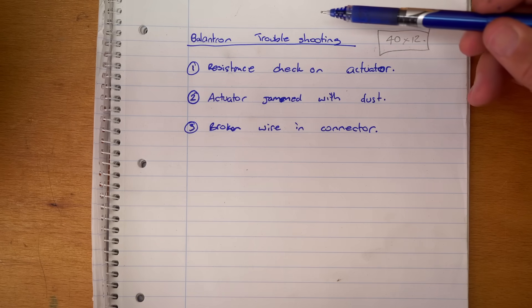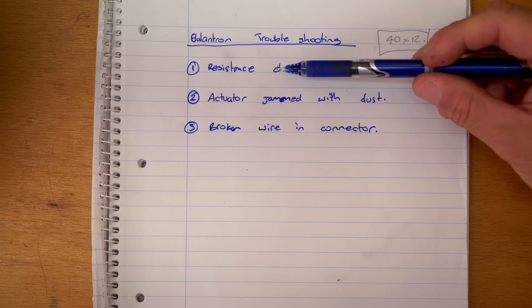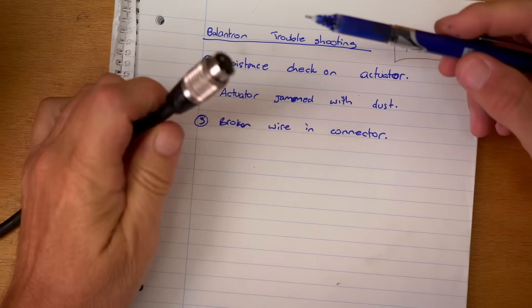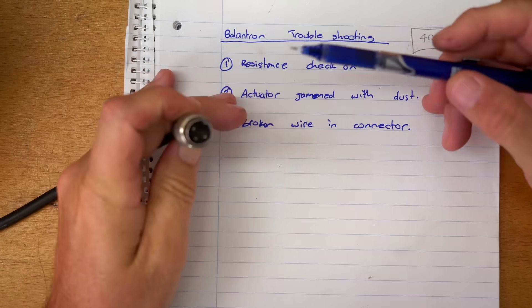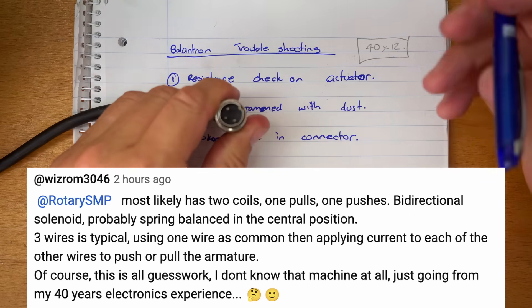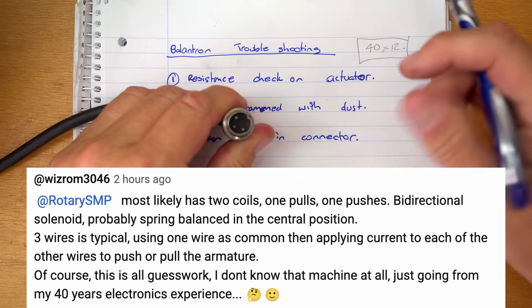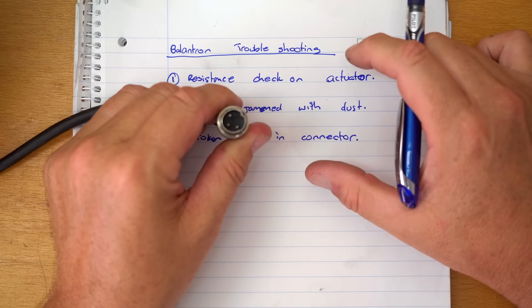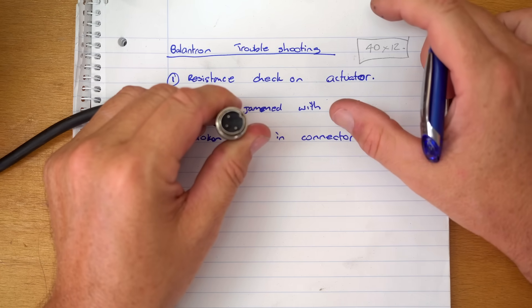Now running through some of the excellent troubleshooting advice, the first one and most obvious is to do a resistance check on this actuator. I think most people think it's probably a solenoid and because there's a three pin connector it's probably a double solenoid with one coil for extend and another coil for retract.